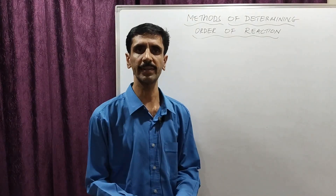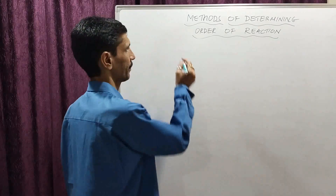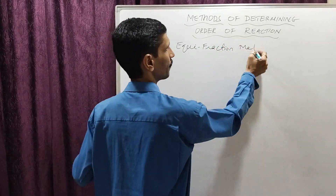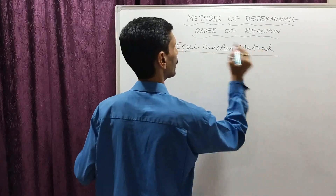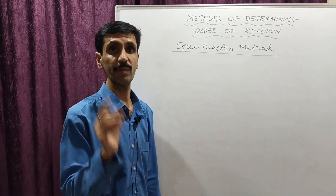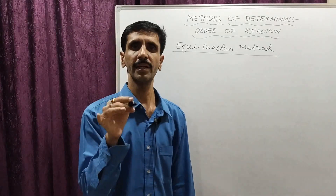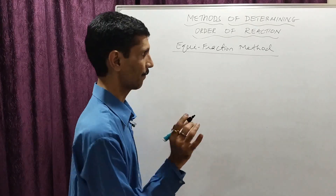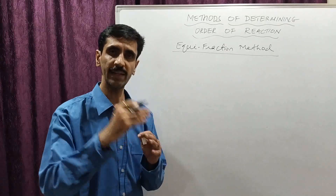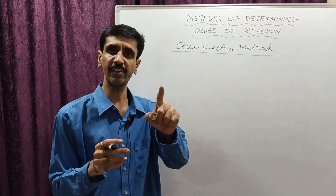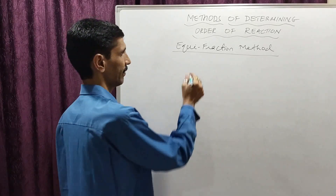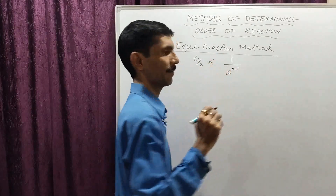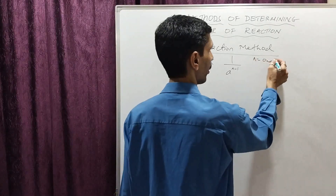We move on to the third method, called the Equifraction method. T half is the time required for the initial concentration to reduce to one half of its value. Considering T half with respect to the order of reaction and the initial concentration, T half is proportional to 1 upon a raised to n minus 1, where n is equal to the order of reaction.